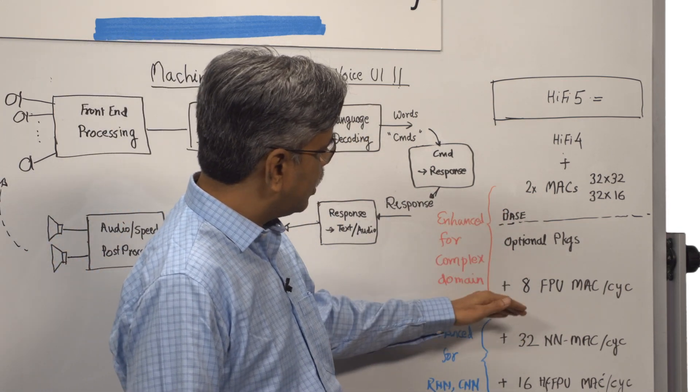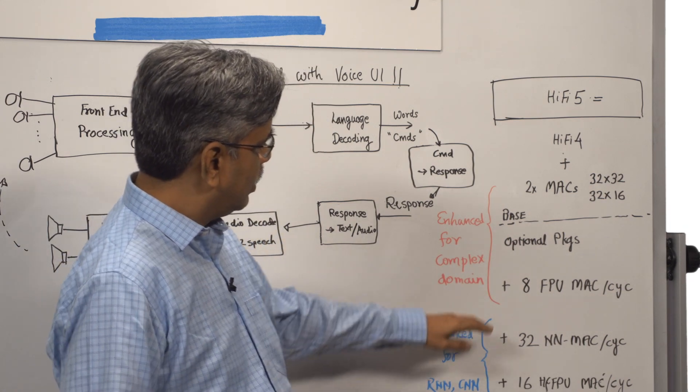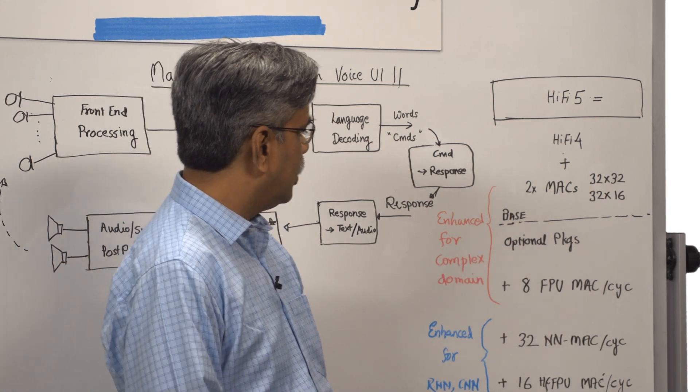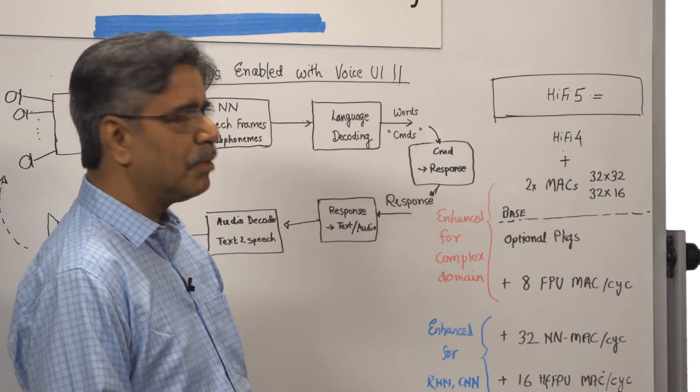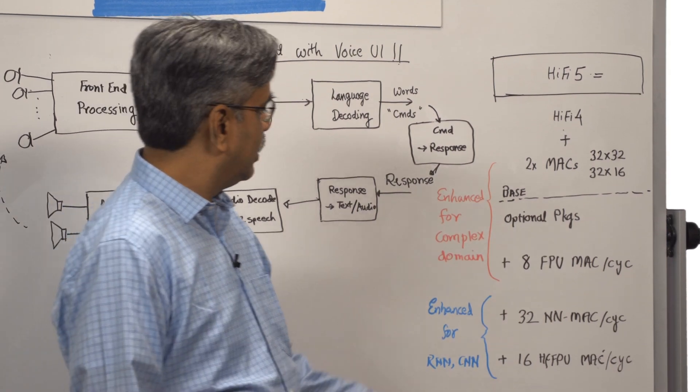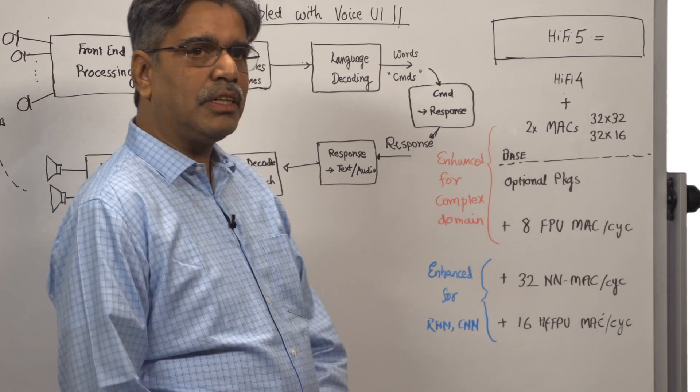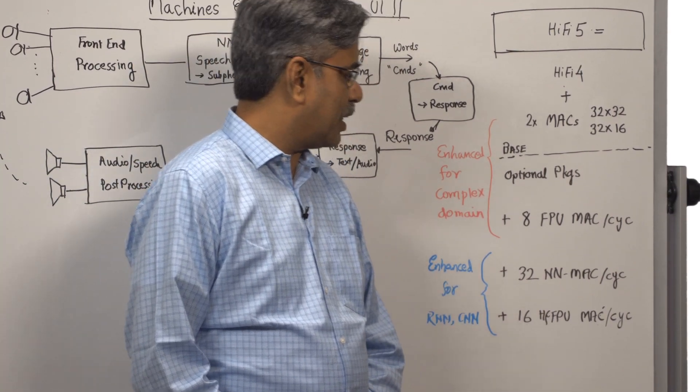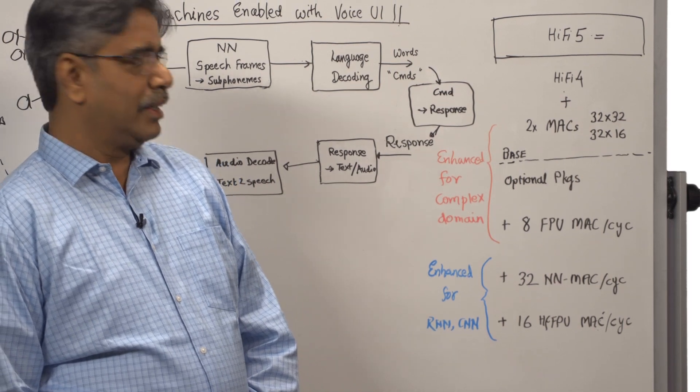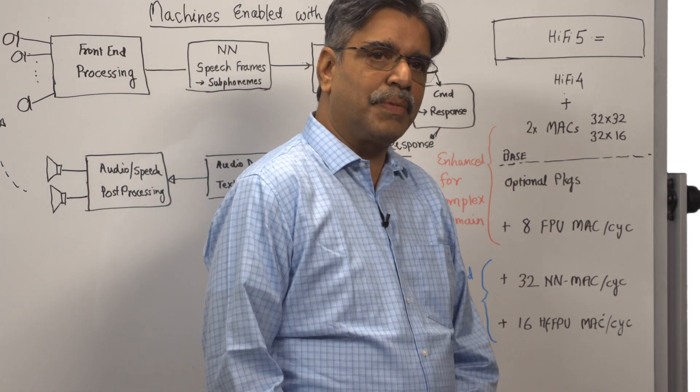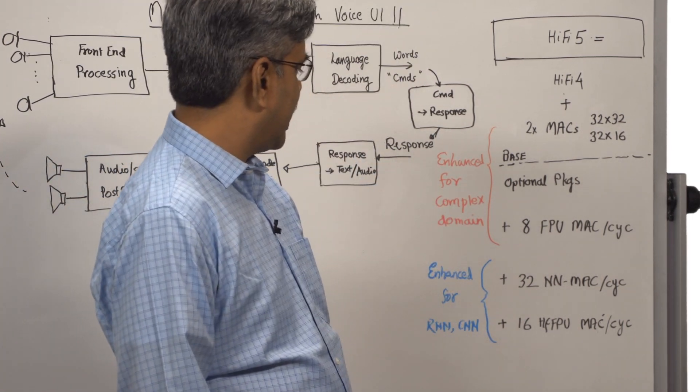There are three optional packages: a floating point unit which can do eight floating point MACs per cycle, and other optional units are 32 neural network MACs per cycle and 16 half-precision floating points per cycle.